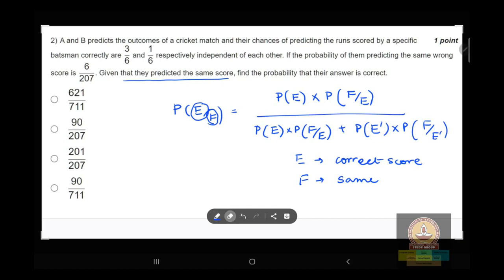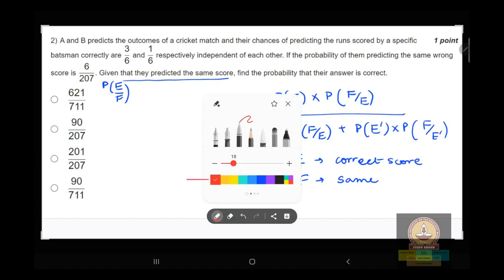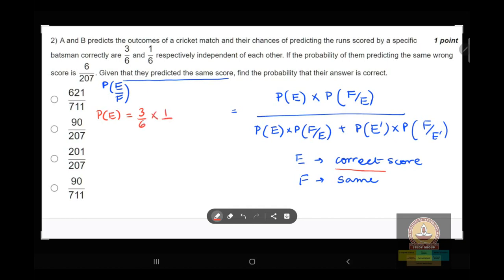So to find P(E|F), we have to substitute this value. So P(E), they are giving the correct score, so correct score probability would be 3/6 times 1/6. Both are giving correct probabilities. This would be 1/12. Again, P(F|E), it means that their score is same given that they are giving the correct score.